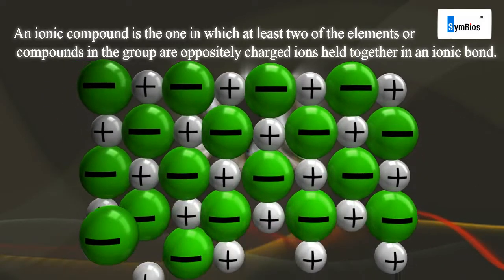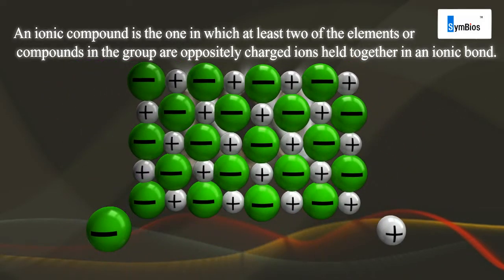The negatively charged ion is called an anion and the positively charged ion is called a cation.